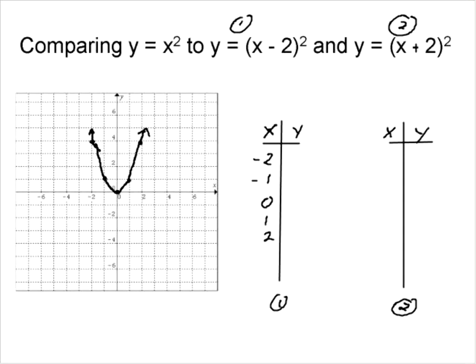For negative 2 minus 2, that's negative 4 squared, we get 16. Negative 1 minus 2 is negative 3 squared, we get 9. 0 minus 2 is negative 2 squared, we get 4.